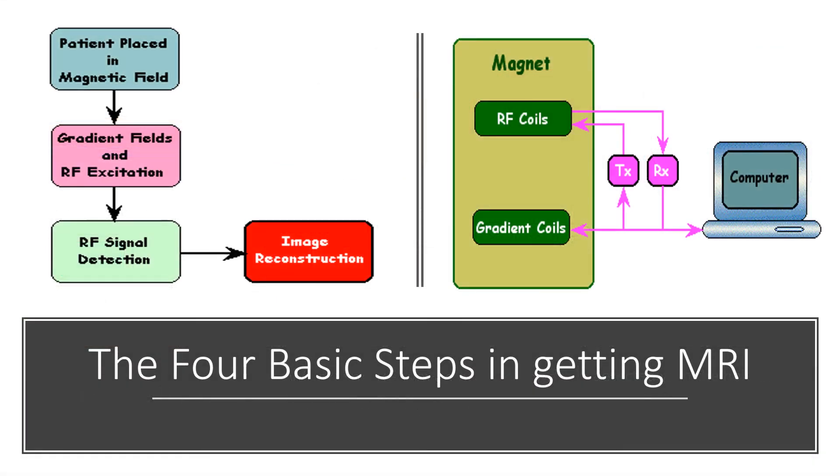In short, the four basic steps in getting MRI are: placing the patient in a magnet, sending RF pulse by coil, receiving signals from the patient by coil, and transformation of the signals into an image by computer.